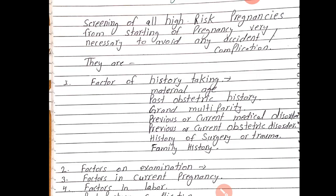Then family history bhi most important hoti hai — ismein koi medical disorder ya genetic disorder ho patient ko, ya multiple pregnancies, ya phir poor socio-economic status. Socio-economic status bhi dekha jaata hai, kyunki low socio-economic status mein malnutrition ya anemia ki condition ho sakti hai.